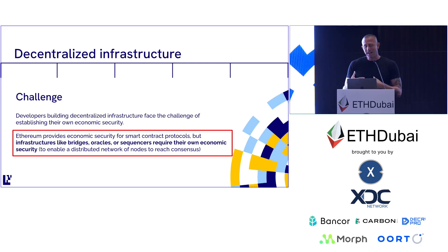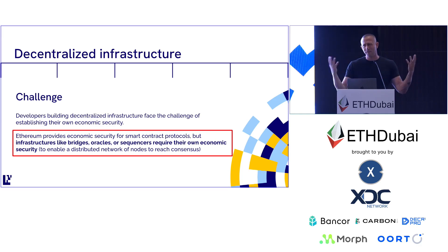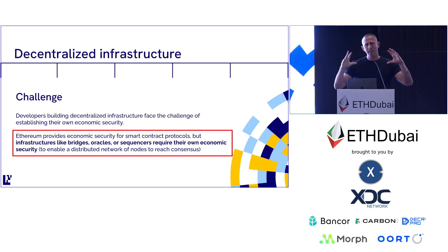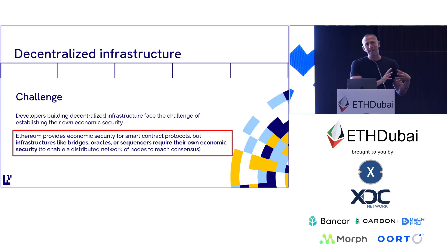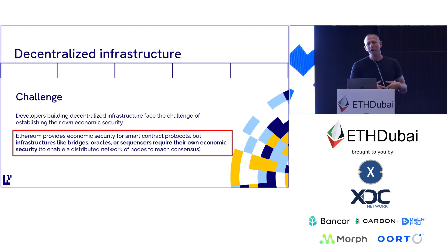The ability to just write a dApp was really revolutionary and brought everyone into Web3 as it existed up until maybe a couple of years ago, before we started getting into the more modular space with rollups and things like that. But the challenge is that you can build a dApp on Ethereum, but you can't build anything else — you can't build an Oracle leveraging Ethereum's economic security using Ethereum as it exists.